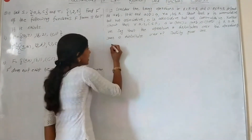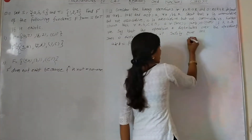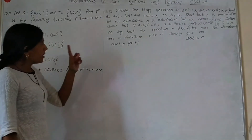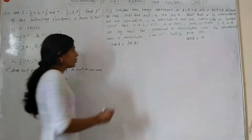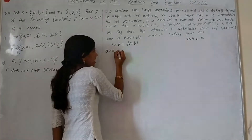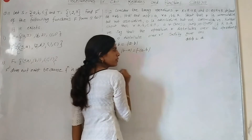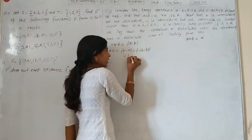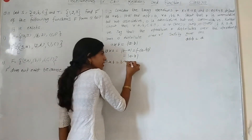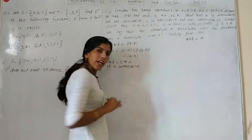A star B is given. For commutativity, we check if A star B equals B star A. B star A is B minus A. Since A star B equals A minus B and B star A equals B minus A, these are not equal.